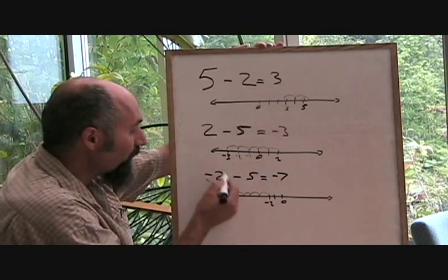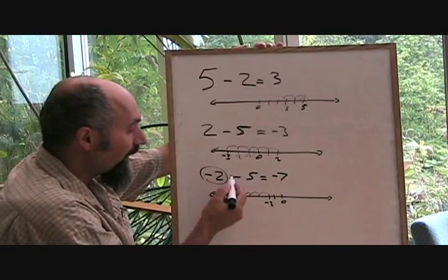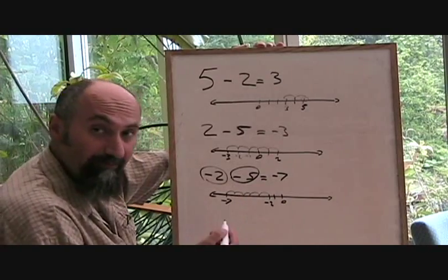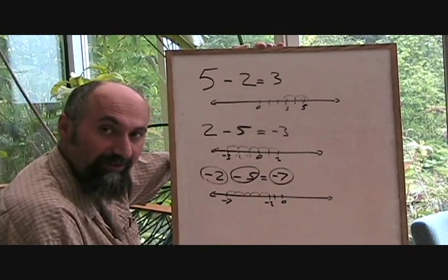I mean you can think about it this way. If you owe me 2 bucks and then you owe me another 5 bucks, you're going to owe me 7 bucks. So you're negative 7.